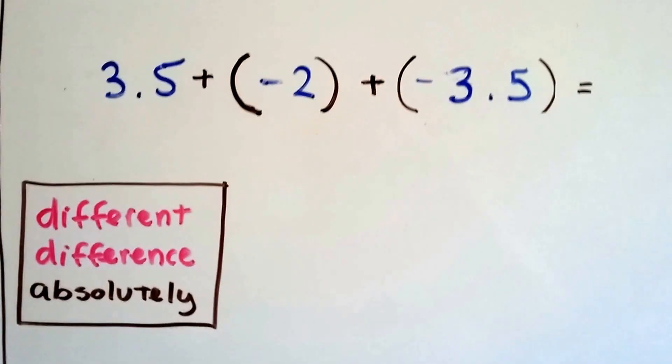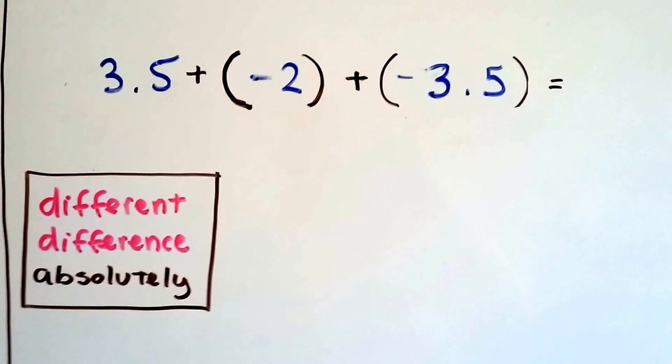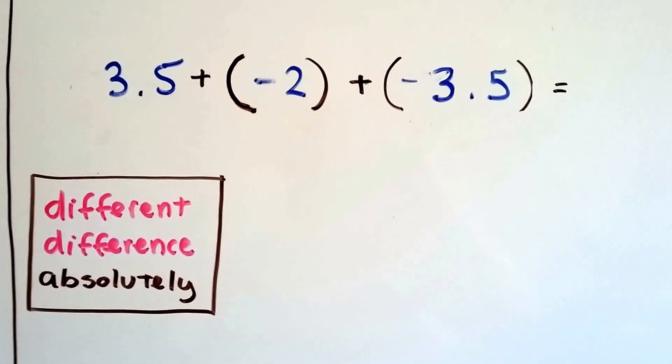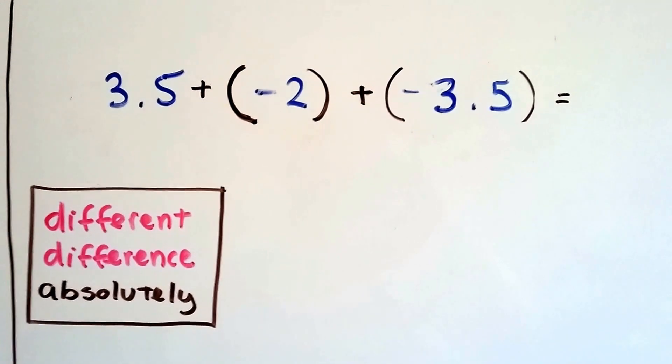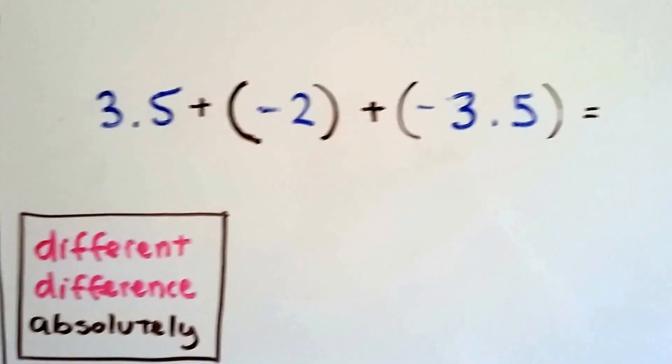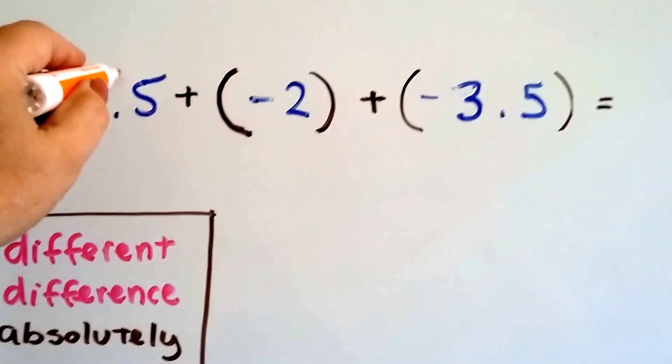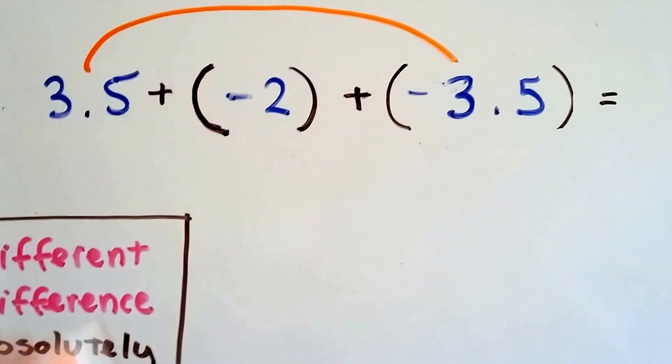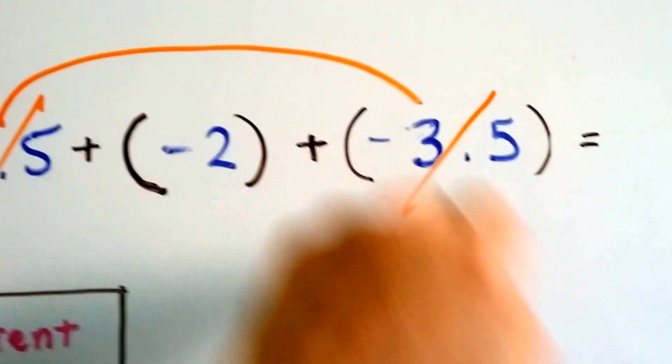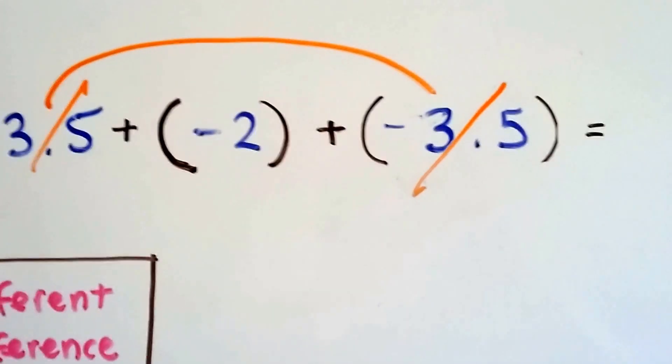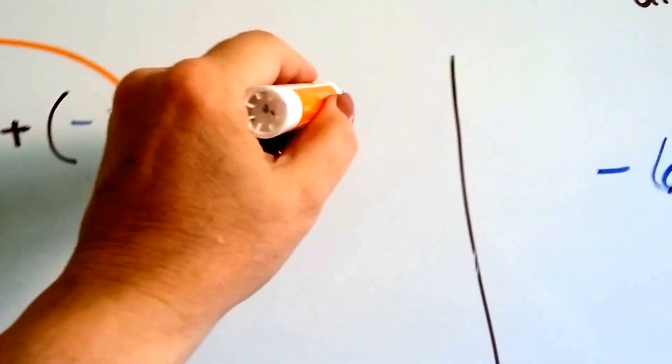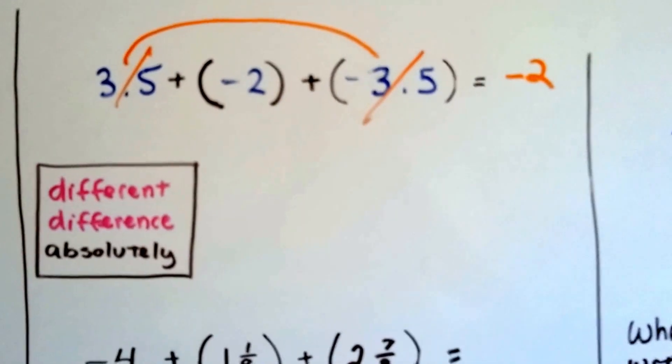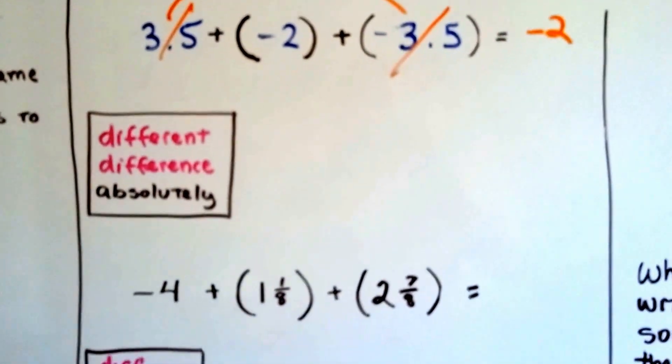Now, here's a quick lesson. Do you notice something? What if we just jumped in and started doing this equation? Positive 3.5 plus a negative 2 plus... Oh, we have a zero pair, don't we? We have an additive inverse. Positive 3.5 and negative 3.5 are additive inverses of each other, and they create a zero pair. So we don't even need to do any math in this one. The only thing that's left is a negative 2. So the answer's got to be a negative 2. See? Additive inverses are awesome. They save us from doing math.